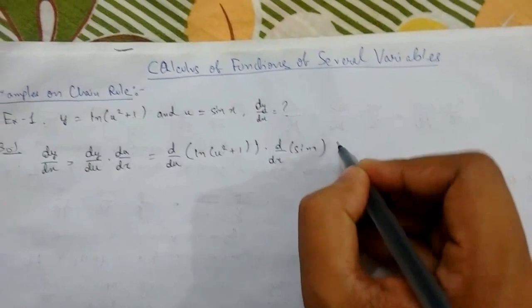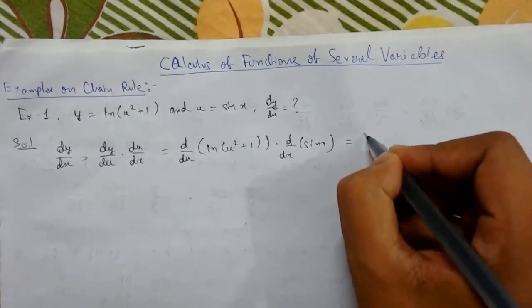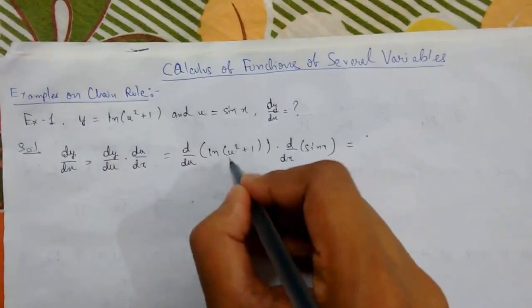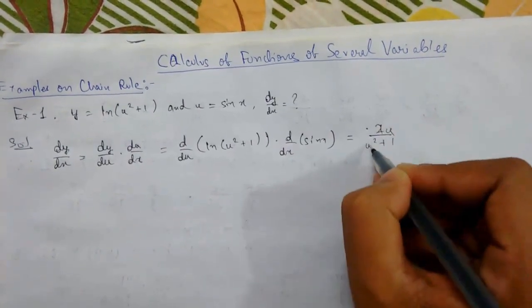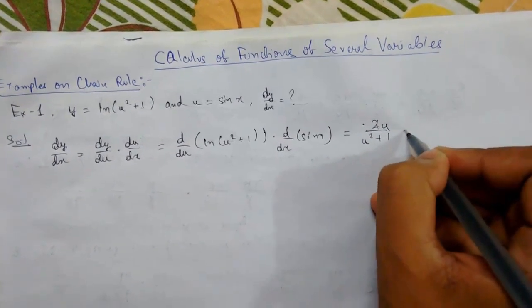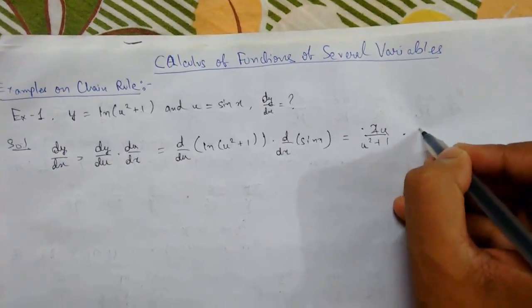This will be 1/(u² + 1) times 2u (the derivative of u²) times the derivative of sin(x), which gives us cos(x).